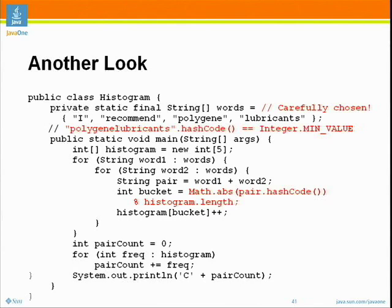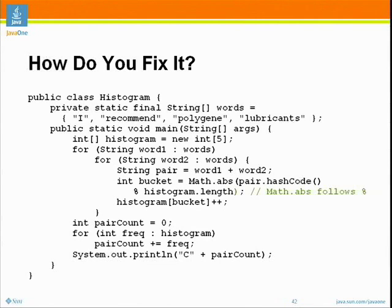So how do we fix it? Two things. First, we do the absolute value after the mod operator. If the first thing we do is take the hash code mod length, that gives us a value between negative 4 and positive 4. Then we take the absolute value of that — the absolute value of something between negative 4 and 4 is between 0 and 4. Now we're guaranteed to get an actual array location. With that fix, the program does end up with 16 as pair_count. Also, I've changed 'C' from a character to a String, so now it will really print C16, just as my colleague said it should.